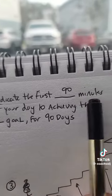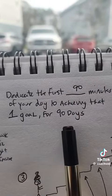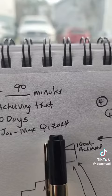The rule says dedicate the first 90 minutes of your day to achieving that one goal for the next 90 days. Of course, that's Q1 2024.